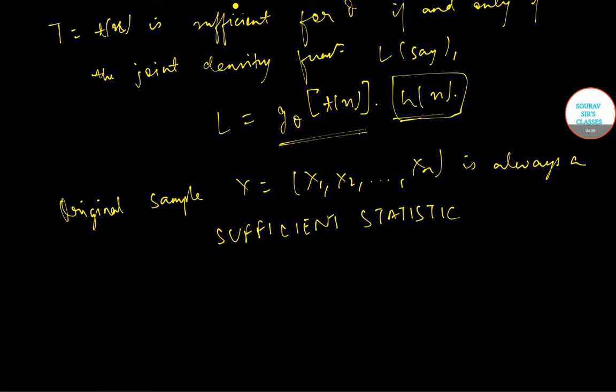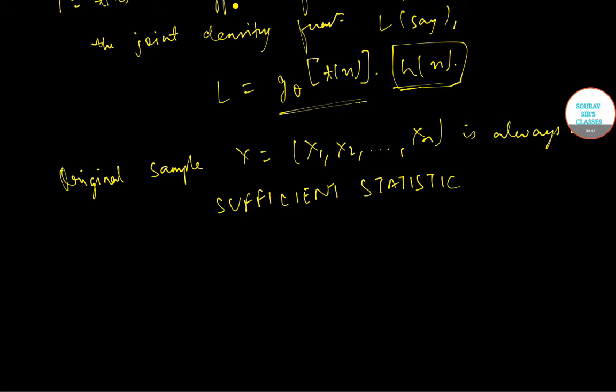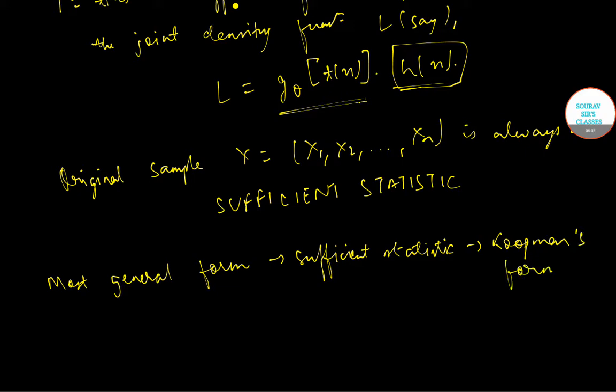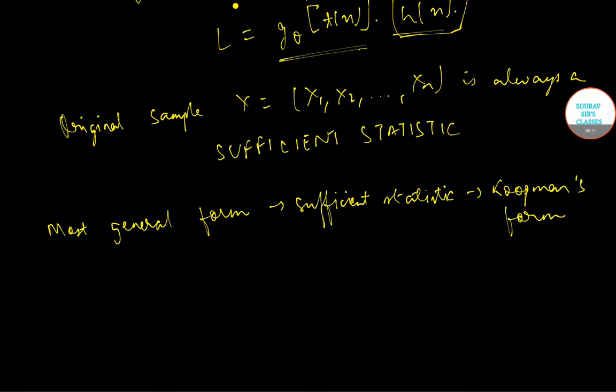Again, the most general form of the distributions admitting sufficient statistic is Koopman's form, and is given by L is equal to L(x, theta) that is g(x) into h(theta) into exponential A(theta) times psi(x).